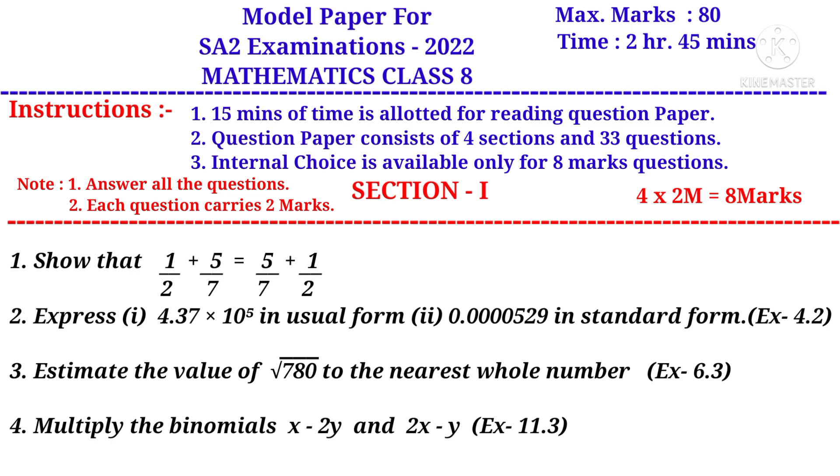Number 2, express: (i) 4.37 × 10^5 in usual form, (ii) 0.0000529 in standard form. It is a question from 4th chapter. Number 3, estimate the value of √780 to the nearest whole number. It is a question from 6th chapter.